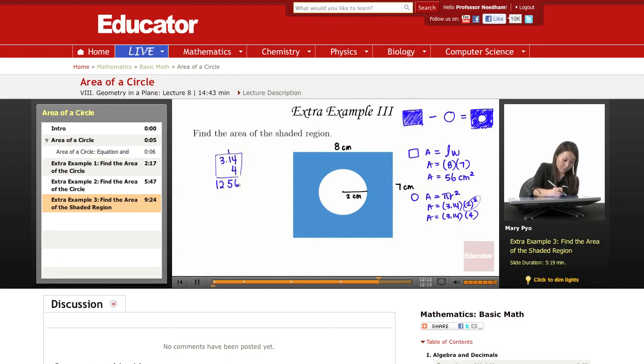I have two numbers behind the decimal point, 1, 2. So I need to place two numbers behind the decimal point in my answer. Area equals 12.56 centimeters squared.